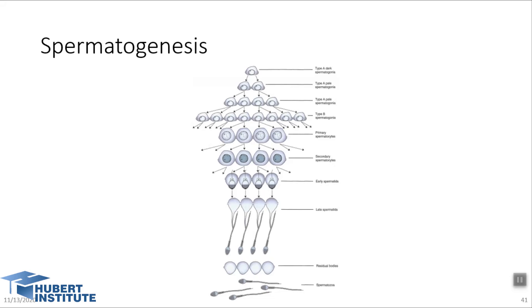Type A spermatogonia undergo a limited number of mitotic divisions to form clones of cells. The last cell division produces type B spermatogonia. Type B spermatogonia then divide to form primary spermatocytes. So the sequence is: type A spermatogonia divides by mitosis to produce type B spermatogonia, and type B spermatogonia divides and enters the first meiotic division to form primary spermatocytes.